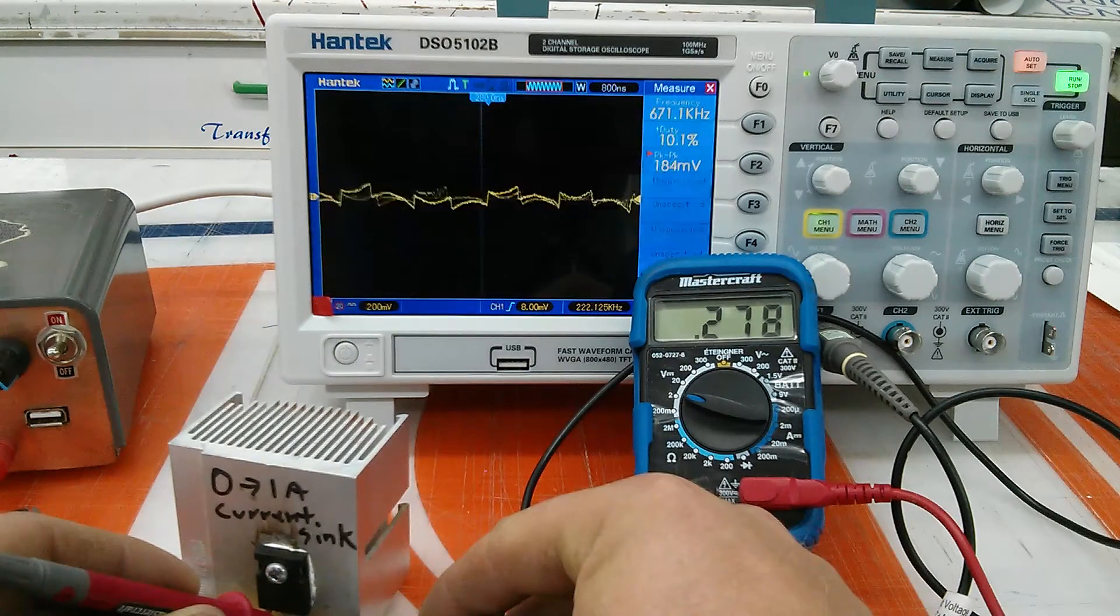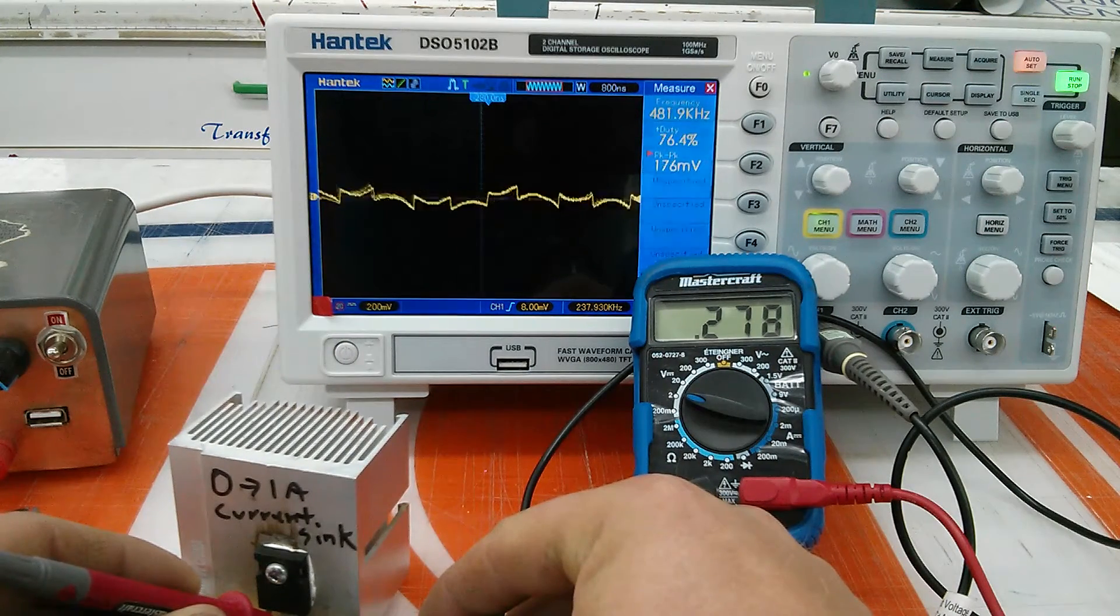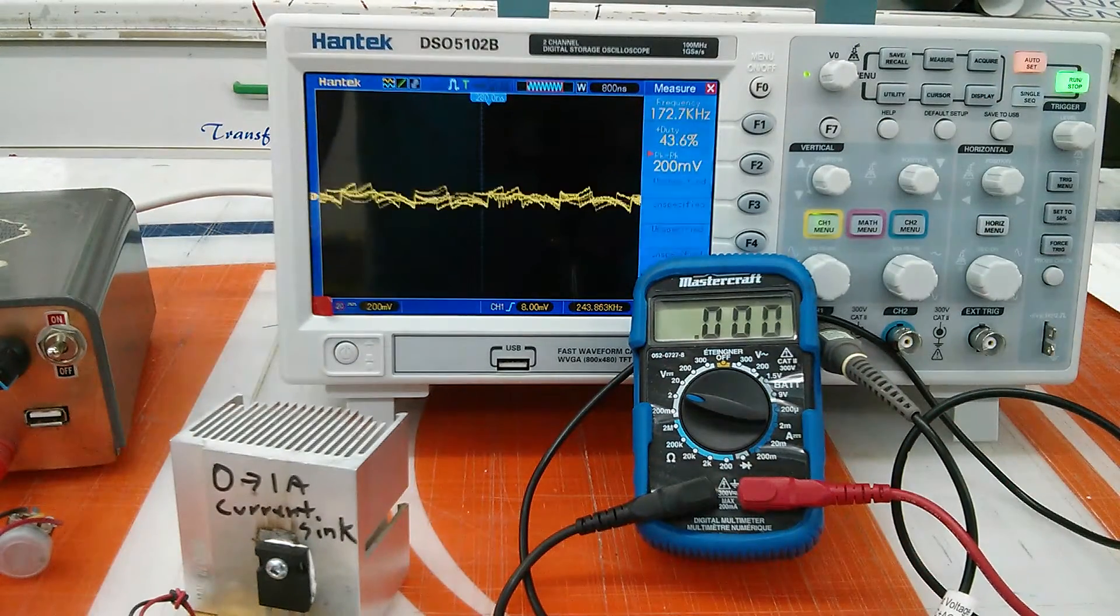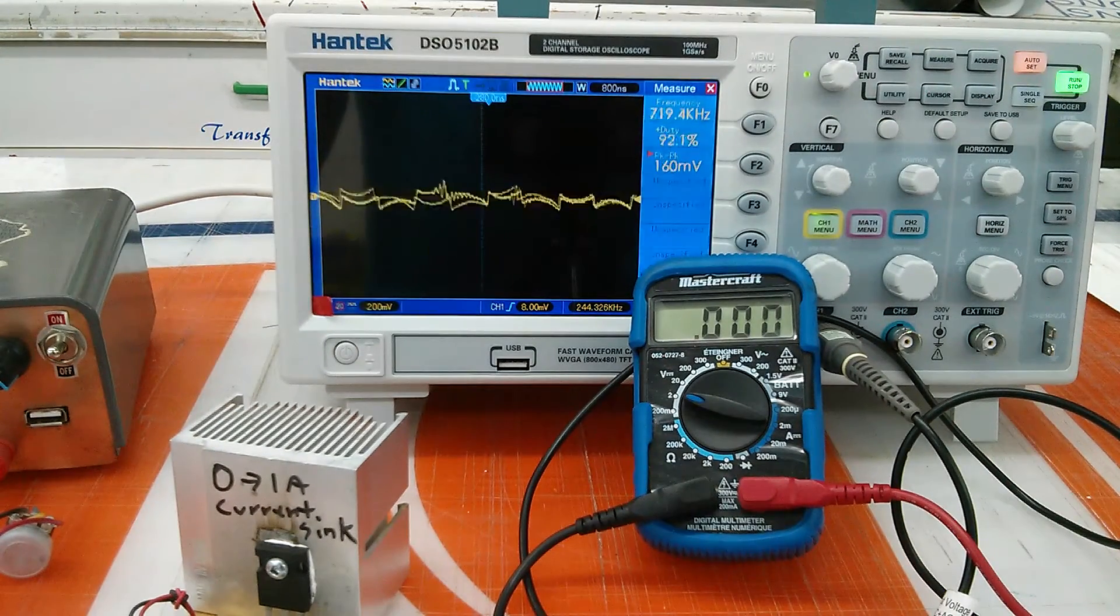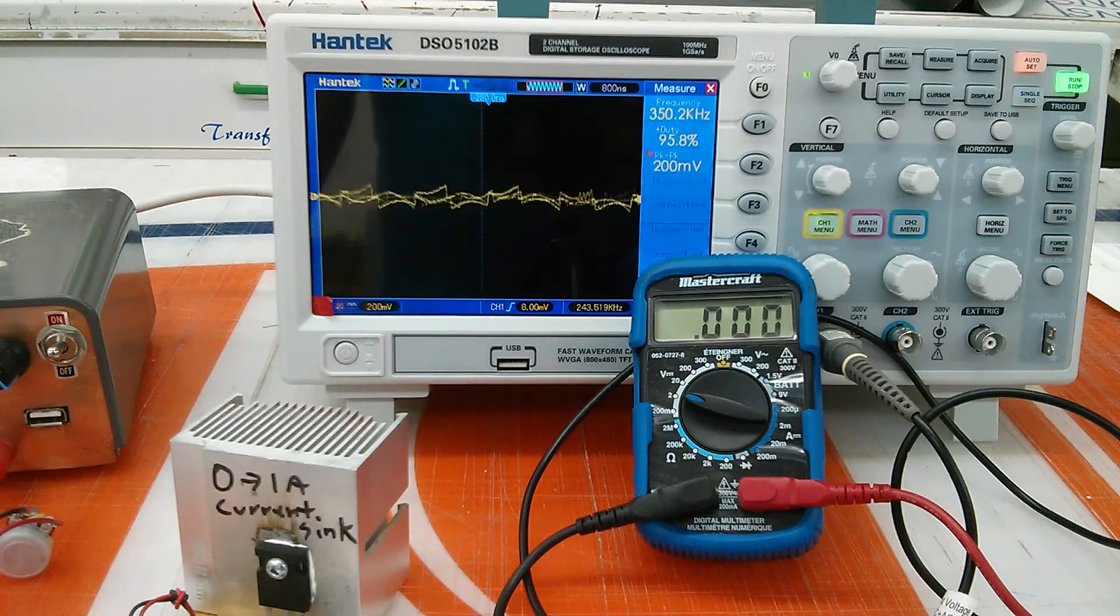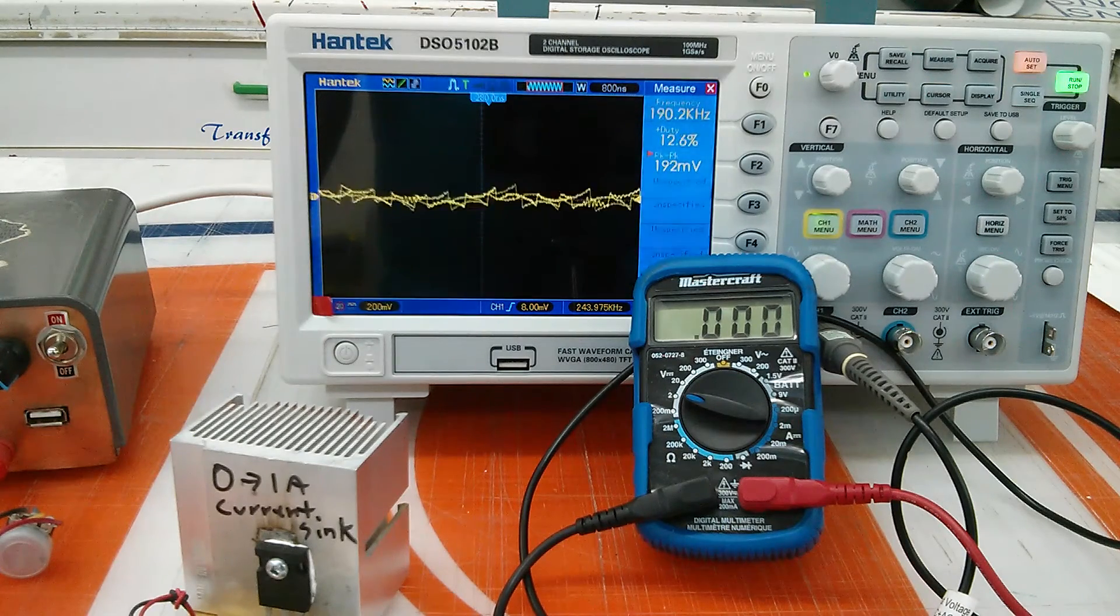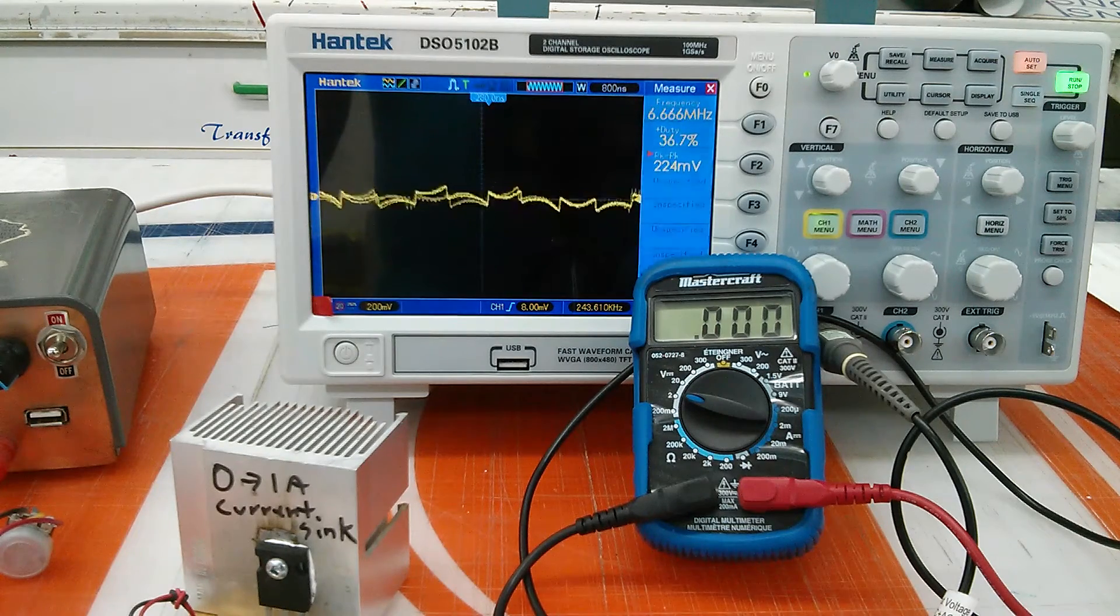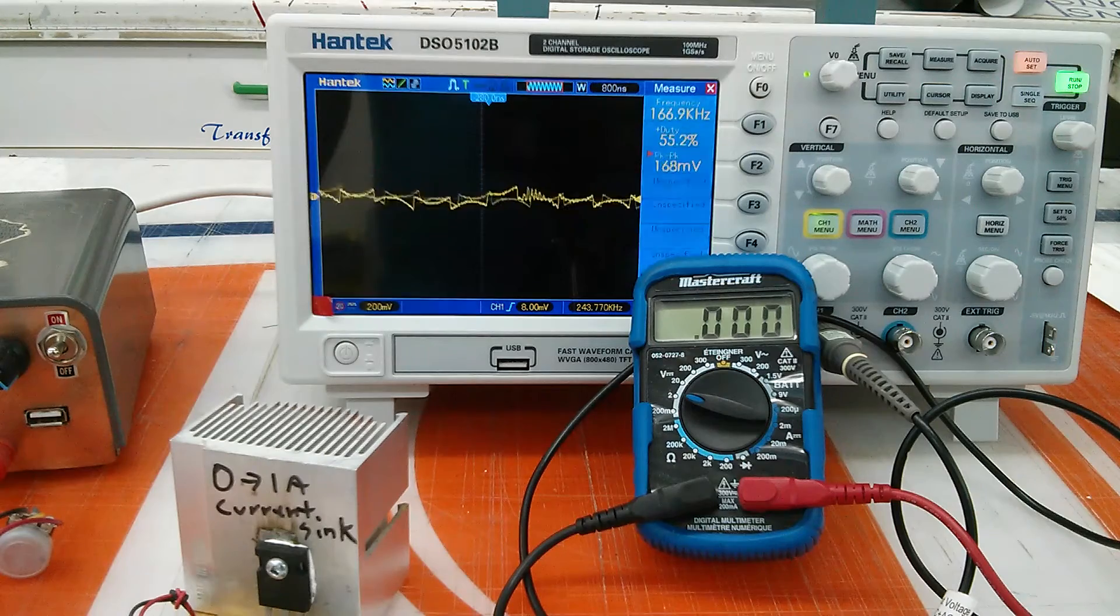It starts to get jittery at about 278 milliamps. Just in case anybody noticed it's on the volt range, that is correct. I'm simply measuring the voltage drop across my sense resistors on the current sink. It's set up so that a 1 volt drop would be 1 amp.